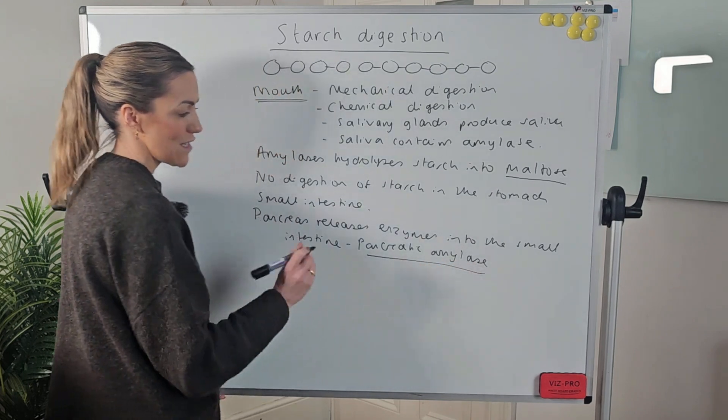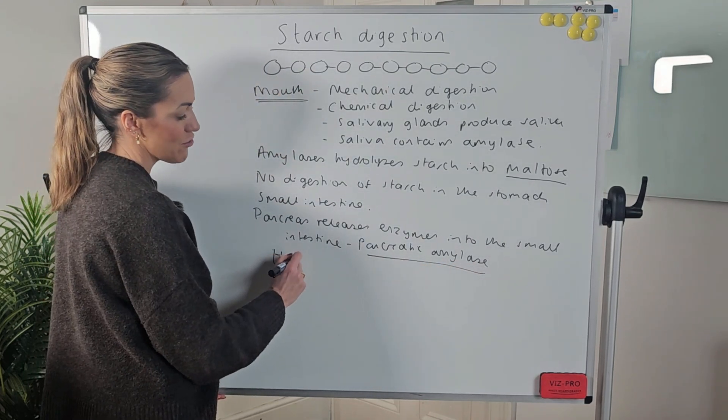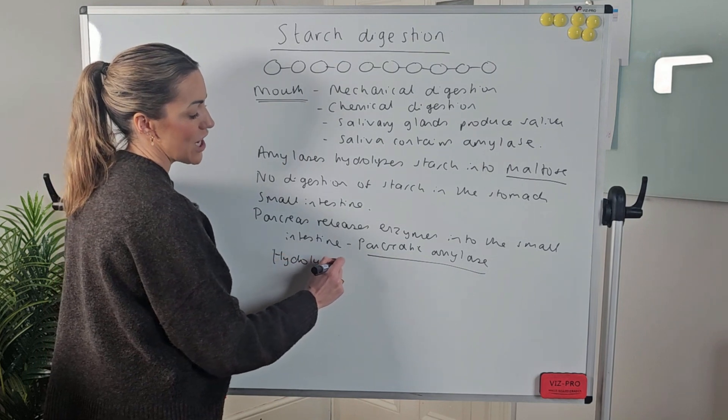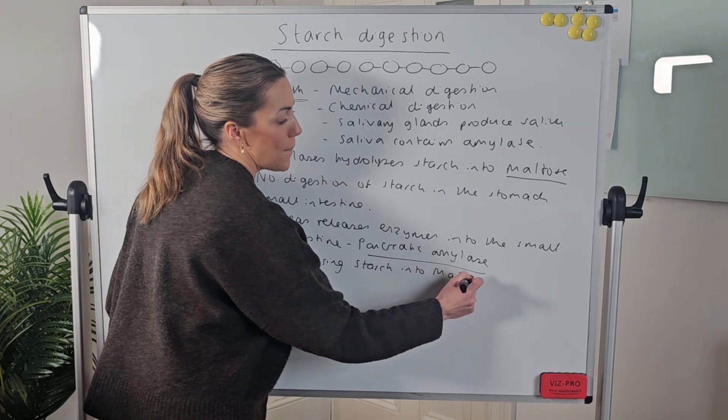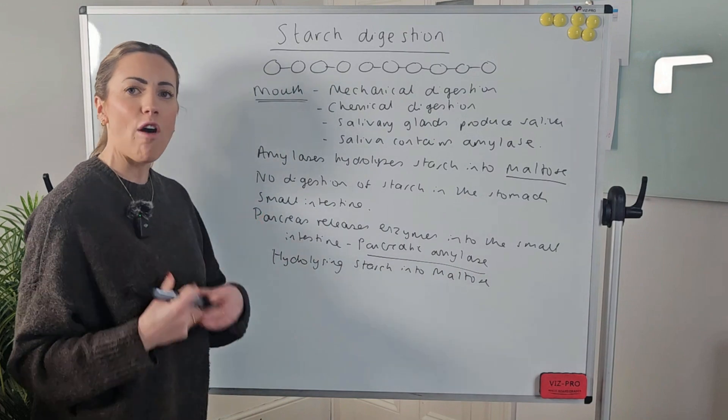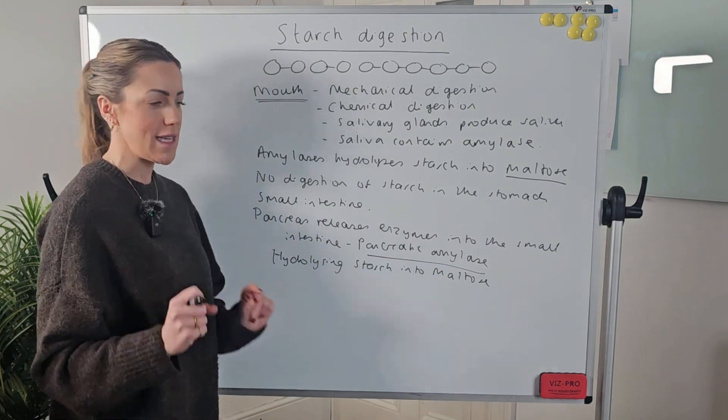Again, this is amylase, so again, it's hydrolyzing or digesting any remaining starch into maltose. So we've still only got the disaccharide maltose by this point.